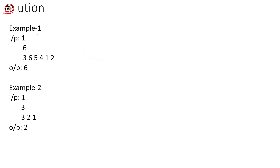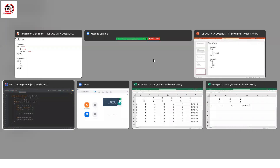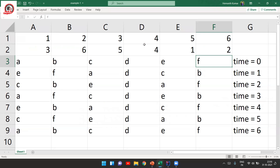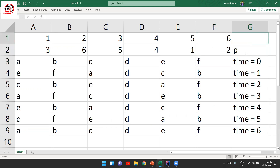Looking at the test case: T is 1, N is 6, and the P array is the dancing pattern. The output should be 6. Let's see how we arrive at 6. There are 6 pandas, so we write positions 1 through 6. At time zero, the order of pandas will be A, B, C, D, E, and F.